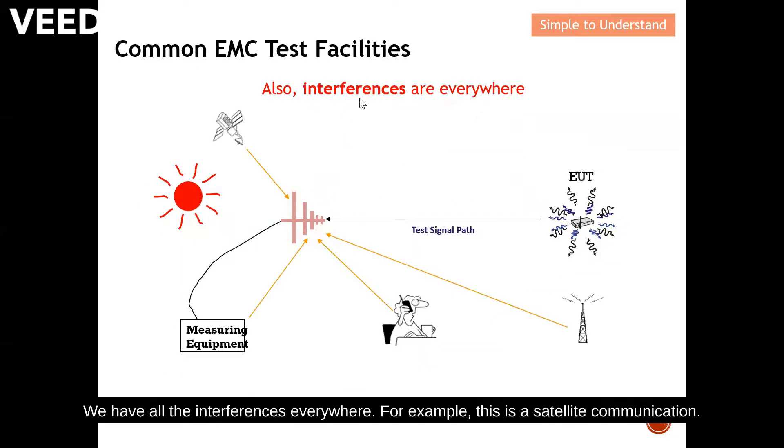We have all the interference everywhere. For example, this is satellite communication. It may send a signal indirectly to the measuring antenna. We have people making a phone call or a base station that is nearby the open area test site.